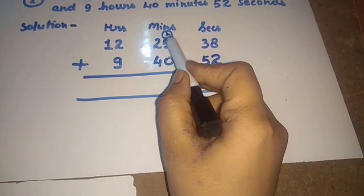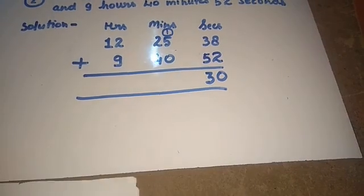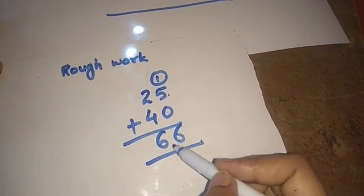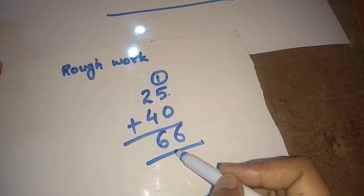Now in the minutes column: 25 and 40 and 1 carry. 5 plus 1 is 6, and 4 plus 2 is 6, giving us 66. This is also more than 60.